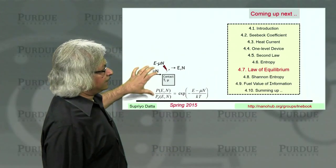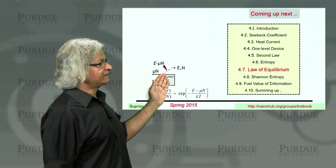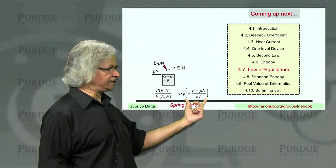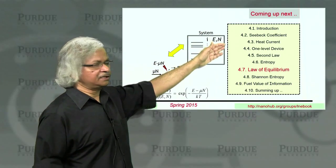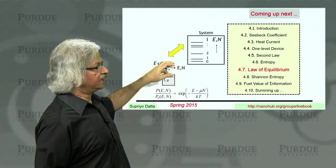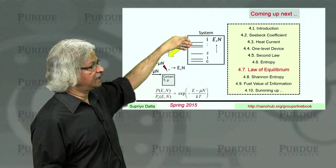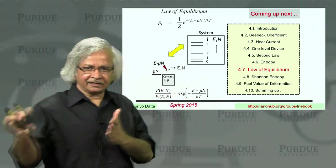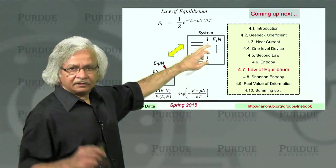So what I'll try to do next is that using this basic property of contacts that I mentioned, property that it is easier to give up energy to it than to take from it. This ratio is always exponential, this E minus mu N over kT. Using this idea, we'll come up with the law of equilibrium. That is, supposing we have a system with various energy levels, and it is in contact, it is exchanging energy and particles with a contact. And given that the contact has this basic property, question is how will the electrons be distributed in this system, and what we'll see is that they'll be distributed according to this universal law of equilibrium. And we'll show how that connects up to the Fermi function that we have been using before. So that's what we'll do then in the next lecture. Thank you.